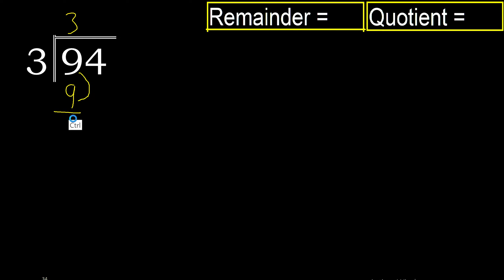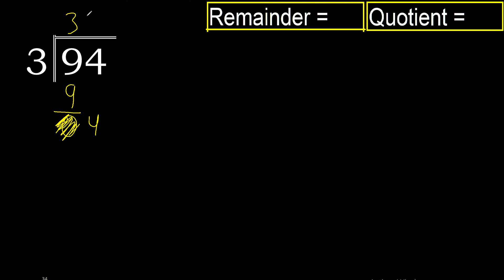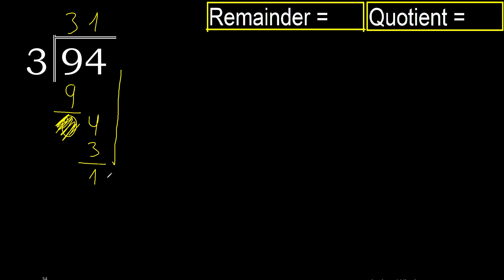9 minus 9 is 0. Bring down 4, eliminate the 0. Now working with 4: 3 multiplied by 2 is 6 — excessive. 3 multiplied by 1 is 3. 4 minus 3 is 1, and there is no number that goes down, therefore finish.